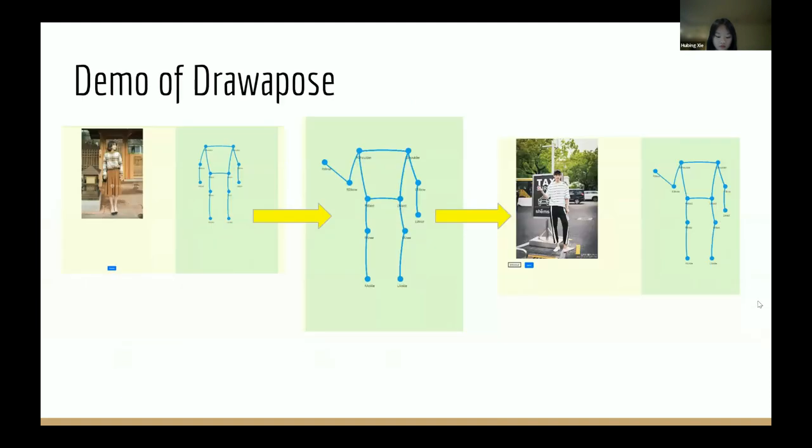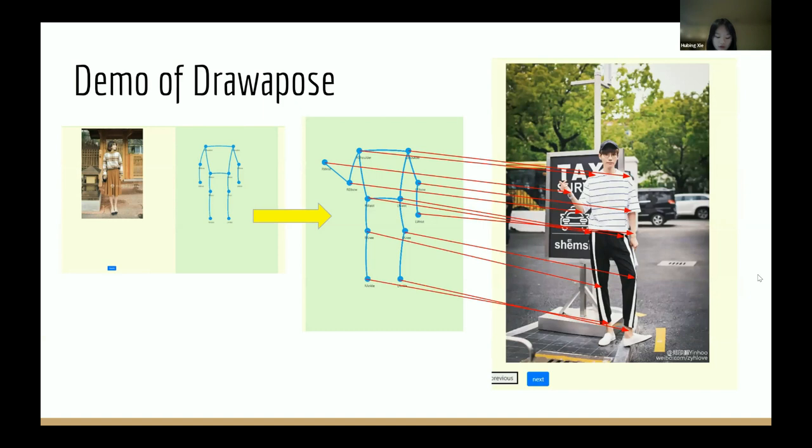The use of Drawapose is really simple. Users simply drag the joints on the stick figure to the place they want, then click search. We can see in the three returned pictures, one of them is almost exactly the same as the stick figure.